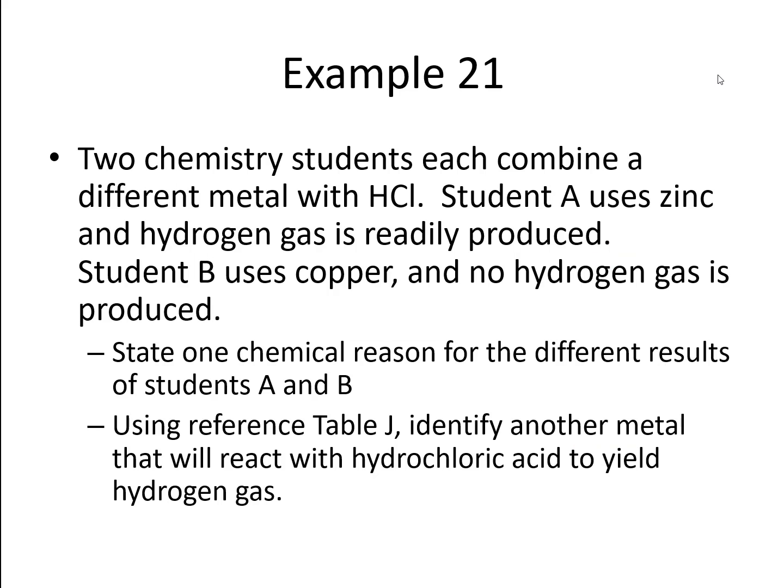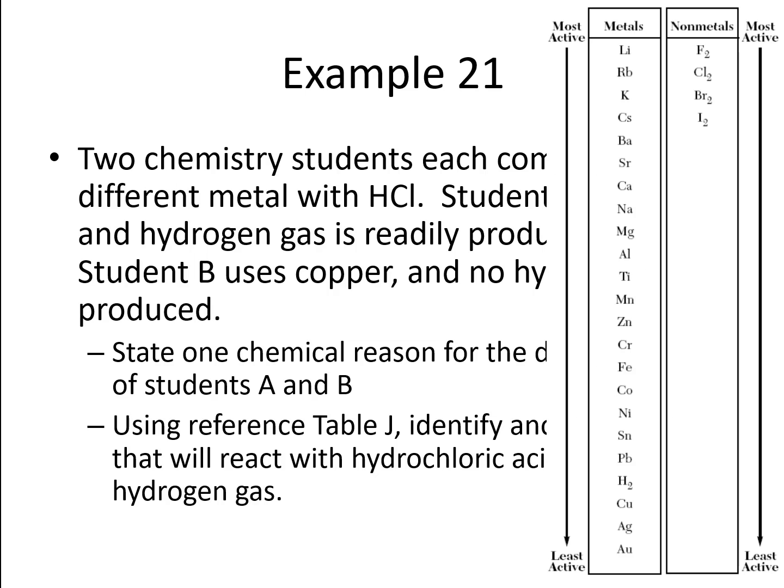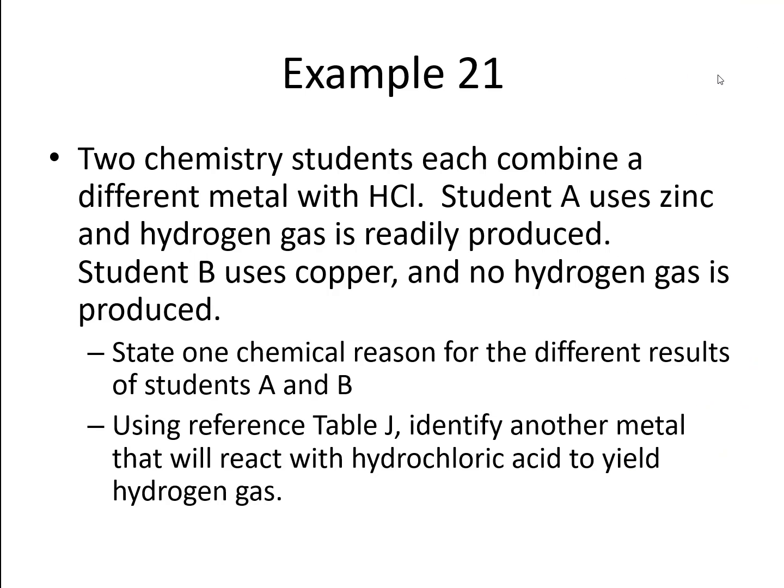Now the second question, using reference Table J, identify another metal that will react with hydrochloric acid to yield hydrogen gas. You could have chosen any metal off of Table J that is above hydrogen. So you literally have over 14 choices. Could have been lithium, rubidium, potassium, cesium, barium, strontium, calcium, sodium, magnesium, aluminum, titanium, manganese. You couldn't use zinc because we already mentioned zinc. Chromium, iron, cobalt, nickel, tin, or lead. Any of those would have been absolutely fine.